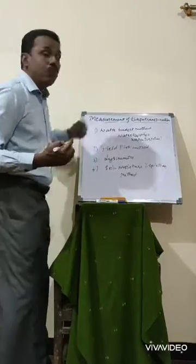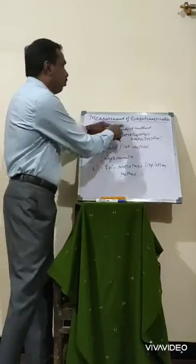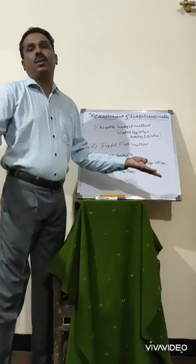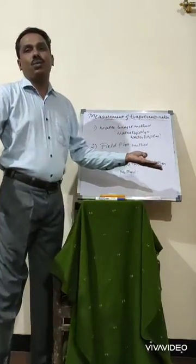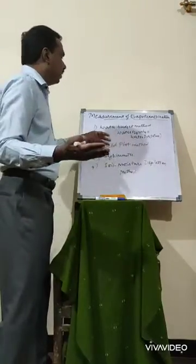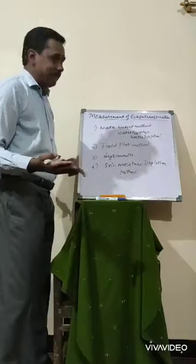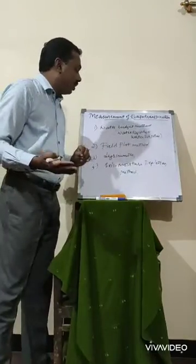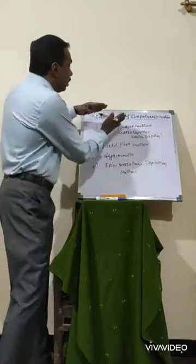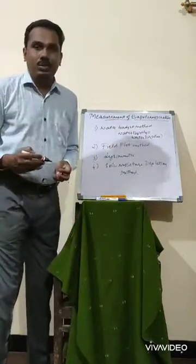These are the four methods used for the measurement of evapotranspiration: the water budget method (water supply equals water disposal), the field plot method, the lysimeter instrument, and the soil moisture depletion method.